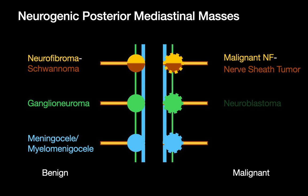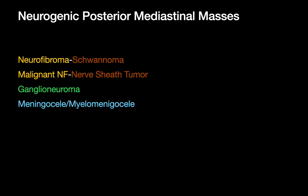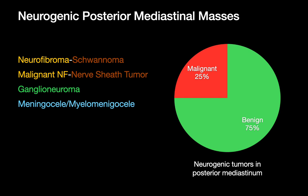Malignant neurogenic posterior mediastinal masses arising from the spinal nerves and nerve sheaths include malignant neurofibromas and malignant nerve sheath tumors. In the adult population, neuroblastomas — a malignant neurogenic tumor of sympathetic chain origin — are pretty uncommon, and there are no malignant tumors of thecal sac origin. So when I think of the differential for neurogenic posterior mediastinal masses, I think of neurofibromas and schwannomas, malignant neurofibromas and malignant nerve sheath tumors, ganglion neuromas, and meningoceles and myelomeningoceles. Fortunately, the majority of neurogenic tumors in the posterior mediastinum are benign.